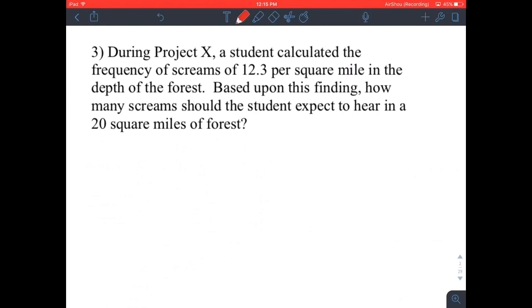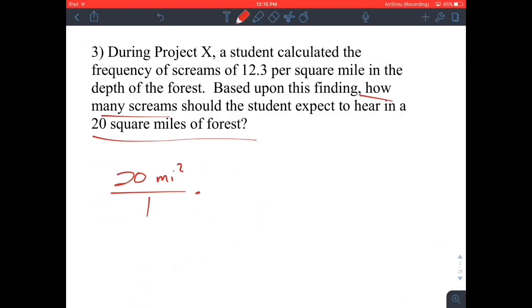During Project X, a student calculated the frequency of screams of 12.3 per square mile in the depth of the forest. Based upon this finding, how many screams should the student expect to hear in 20 square miles? So we get 20 square miles. We're going to multiply this by 1 in the form of a fraction. This is 12.3 screams per square mile. We want the miles to cancel, so we'll put the 12.3 screams on top. It cancels. You got 20 times 12.3, which is 246. That's a lot of screams, folks. That's a lot of screams.